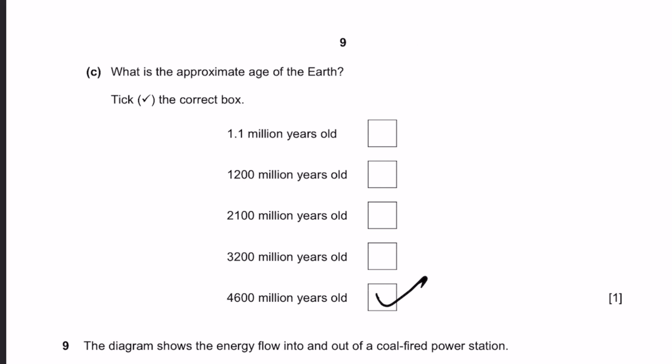Part C. What's the approximate age of the earth? Tick the correct box. The approximate age is 4.6 billion years old, and that means 4,600 million years old.